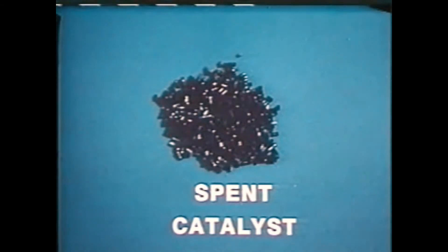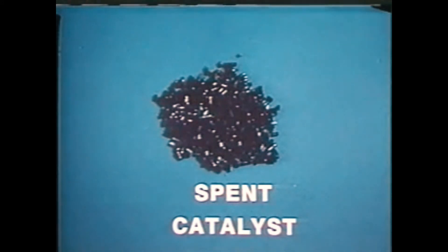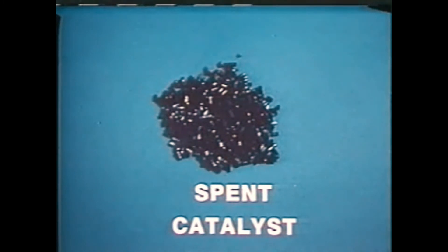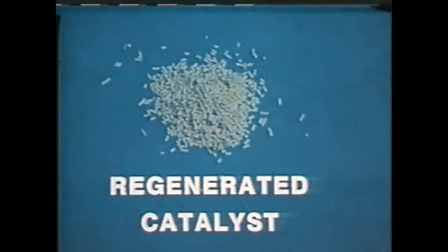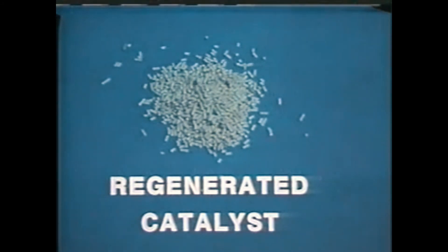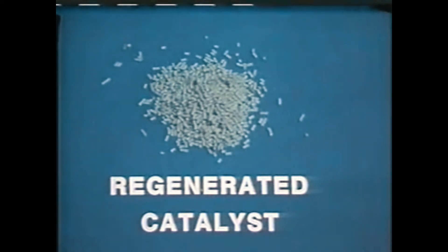During the reforming process, coke, or carbon, is gradually deposited on the catalyst. As this happens, the catalyst's ability to reform the feed declines, so eventually the coke must be removed. The catalyst is cleaned, or regenerated, by burning the coke off its surface. Reforming units are often classified by the method they use to regenerate the catalyst, and basically there are three different ways to do this.